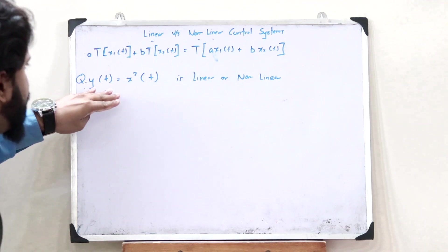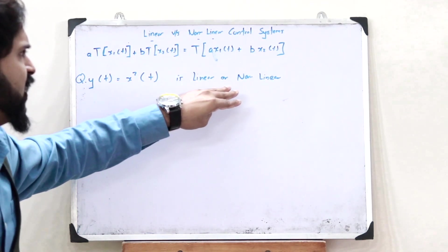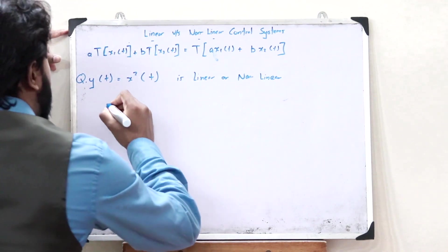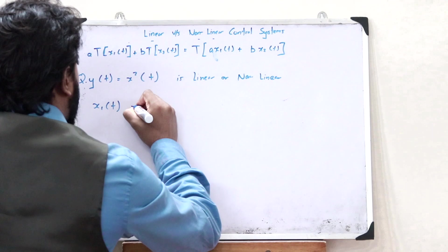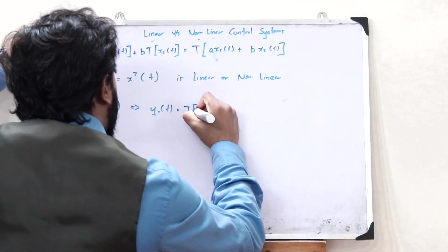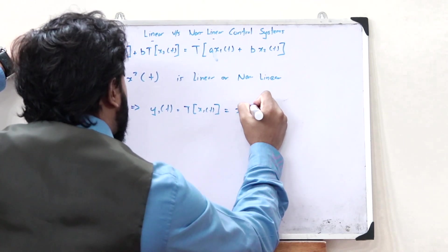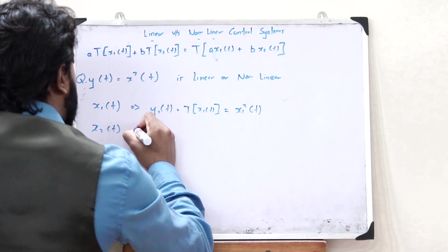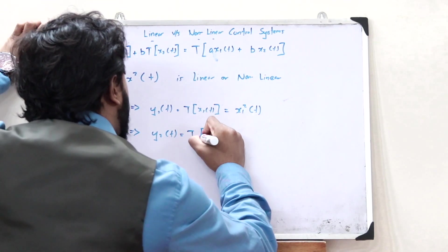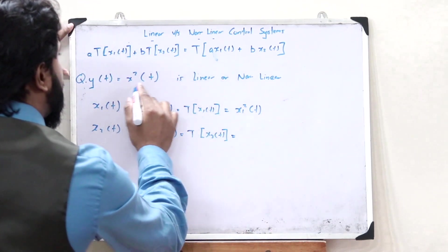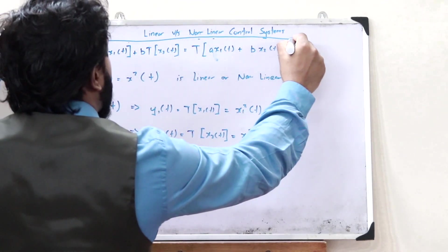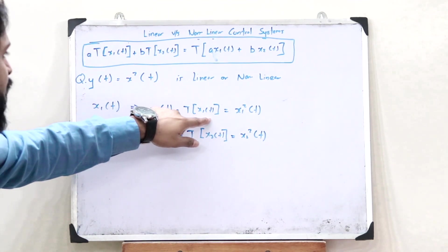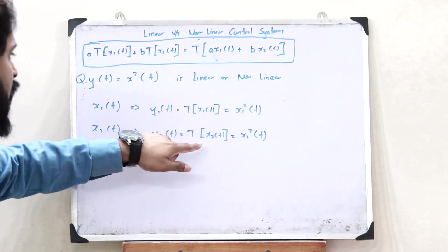The first question: y(t) = x²(t) — is it a linear or a non-linear system? Here the transform is given as x²(t). If the input is x1(t), then the output y1(t) is the transform of x1(t), which gives x1²(t). Similarly, in the case of x2(t), the output y2(t) is the transform of x2(t), which gives x2²(t). So the left-hand side individual transforms are: T{x1(t)} = x1²(t) and T{x2(t)} = x2²(t).